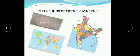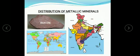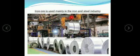Distribution of metallic minerals. China, Australia, and Brazil are the important producers of iron ore in the world. 95% of the total reserve of iron ore in India is located in the states of Odisha, Jharkhand, and Chhattisgarh. Iron ore is used mainly in the iron and steel industries.